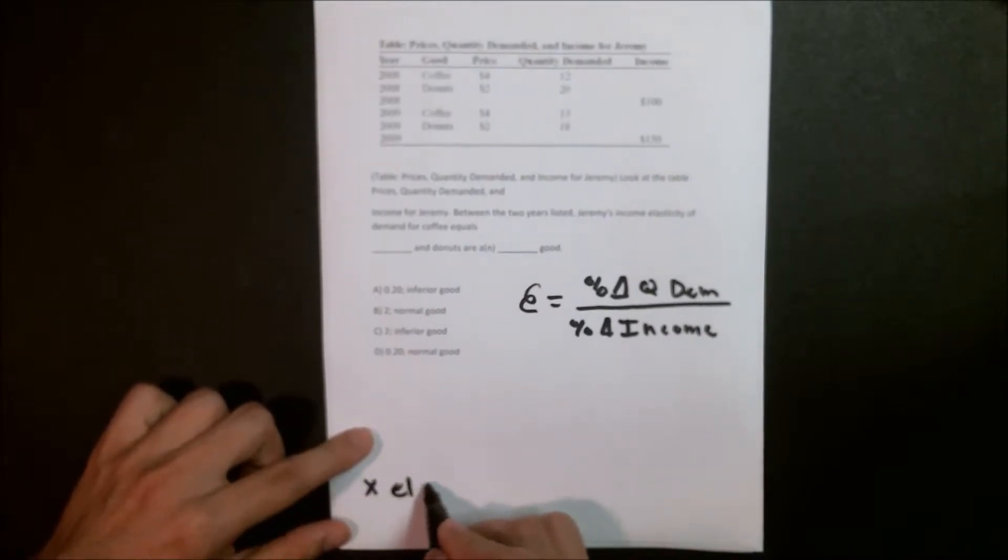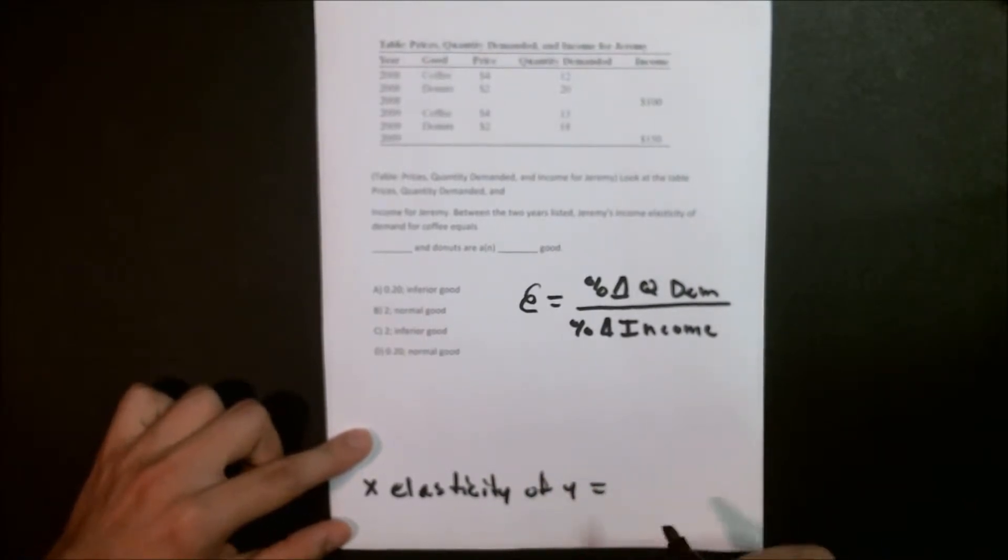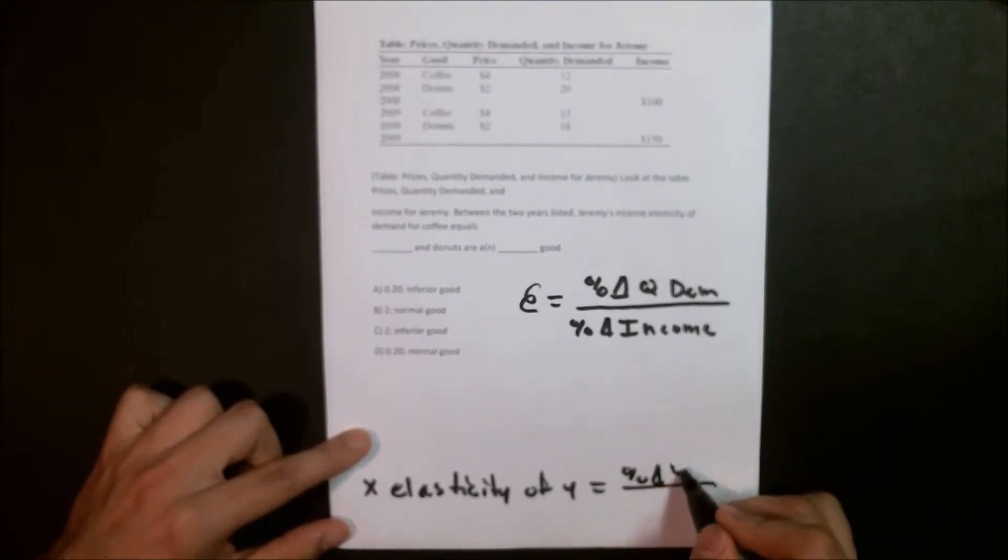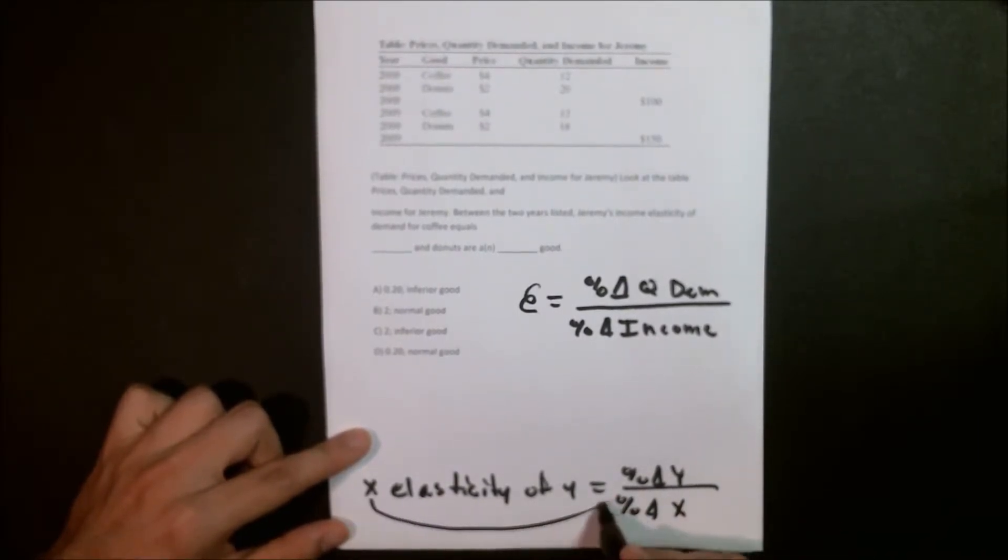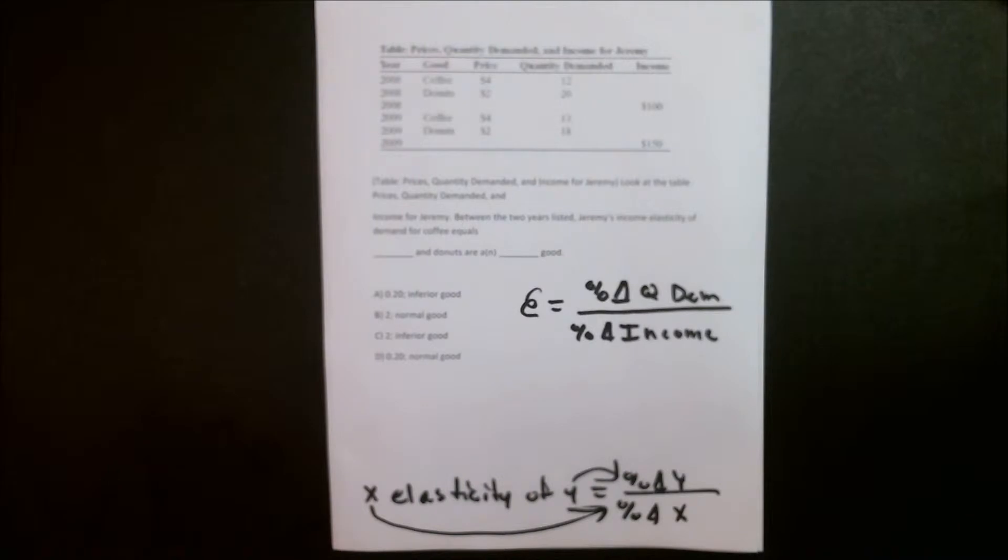And a really easy way to remember how to write these for any elasticity problem, because every single one is going to be income elasticity of demand, price elasticity of demand, something elasticity of something. You're going to write that as x elasticity of y equals, and then where you're going to get is your percentage change of y over your percentage change of x. The first one is going to go on the bottom, and the second one is going to go on the top. It's an easy way to remember any of these elasticity things. In this case, we have the percentage change quantity demanded over the percentage change of income.